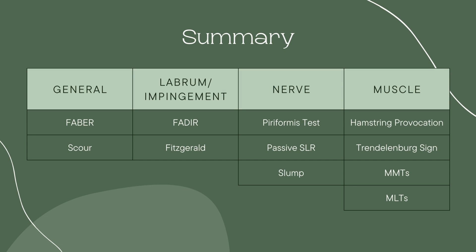Here is a summary of all the tests discussed today, breaking them up into general, labrum/impingement, nerve, and muscle categories. We also discussed specific muscle length tests, though we didn't discuss any MMTs — those are some basic exam strategies. If you want a more detailed chart, be sure to check out the Etsy link below for that information.